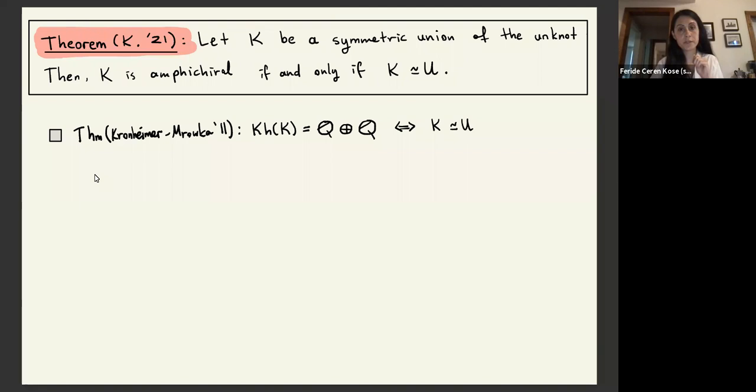And the proof is as follows. So the Khovanov homology is the categorification of Jones polynomial, but detection result is actually known in terms of Jones polynomial, such that if basically the Khovanov homology with rational coefficient, if for a knot, if it has rank two, then it is the unknot.